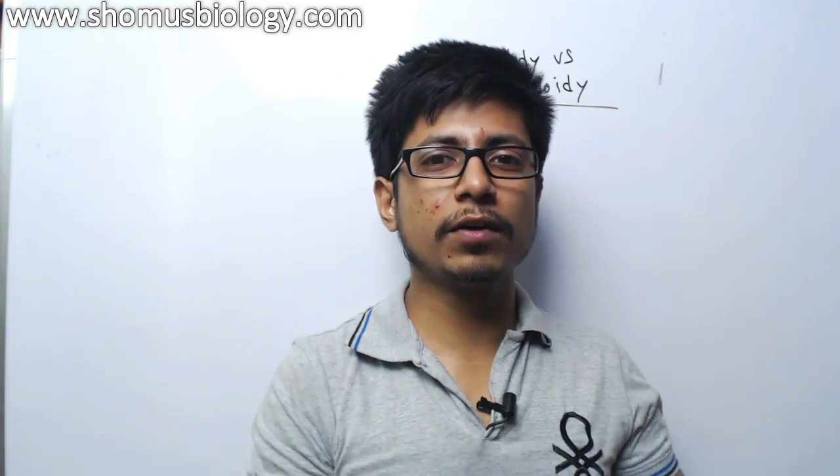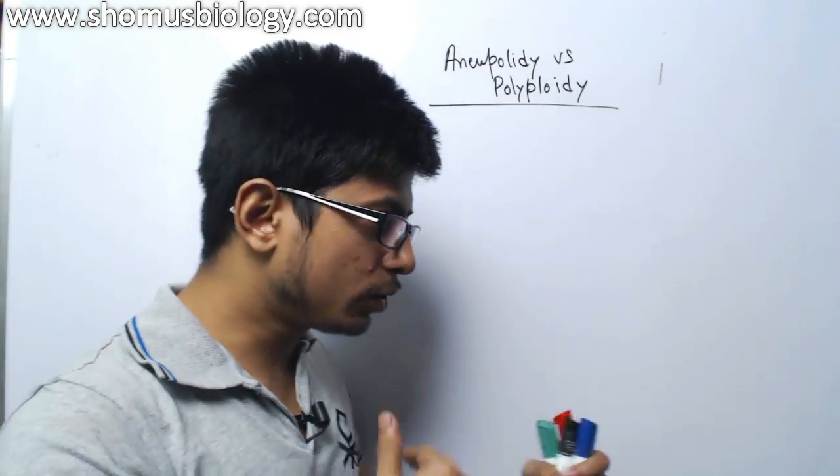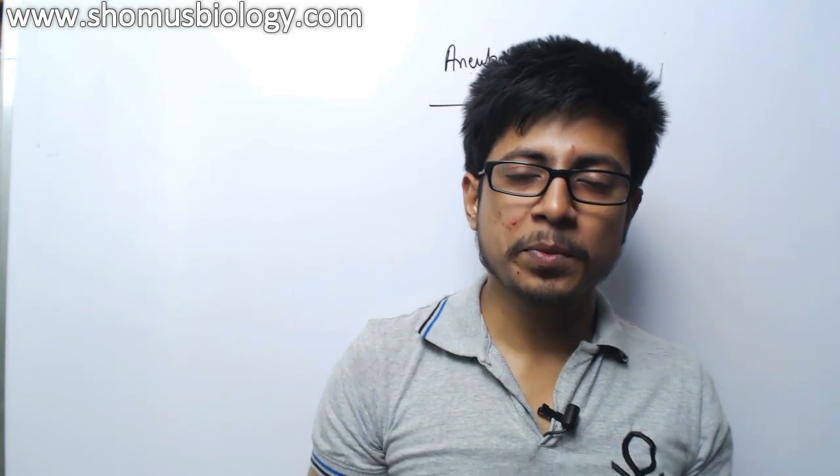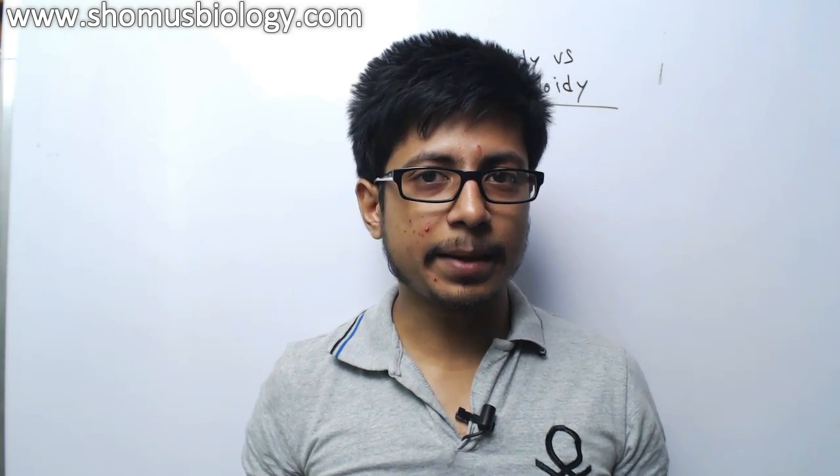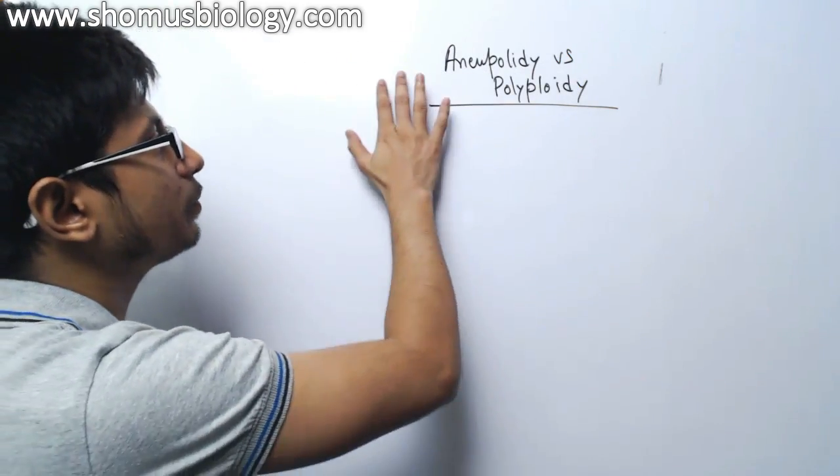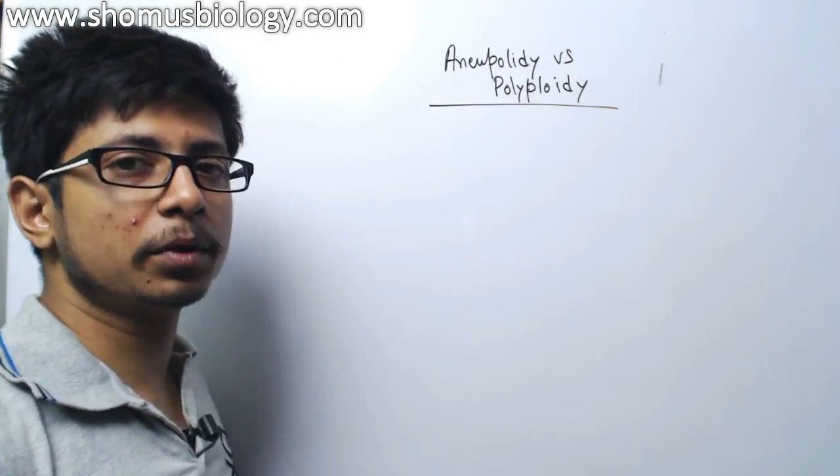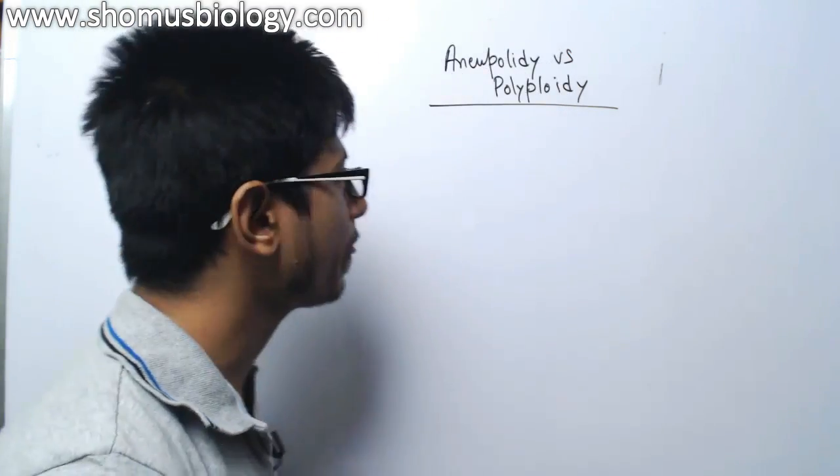Both of these phenomena are the change of chromosome number in a cell. We call it chromosomal aberrations or abnormalities and there are two types of chromosome abnormalities. One is the structural change in the chromosome and the second type is change in the number of the chromosome. In this case of aneuploidy and polyploidy, we are talking about the change in the number of chromosomes in the cell in the body.